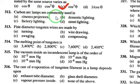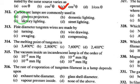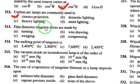Carbon arc lamps are commonly used in cinema projectors. So option A is the answer.